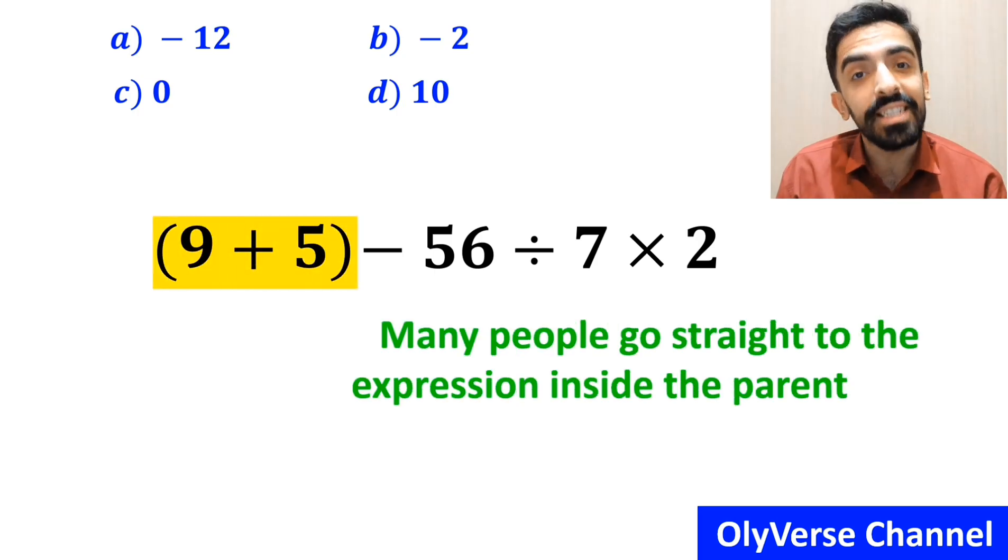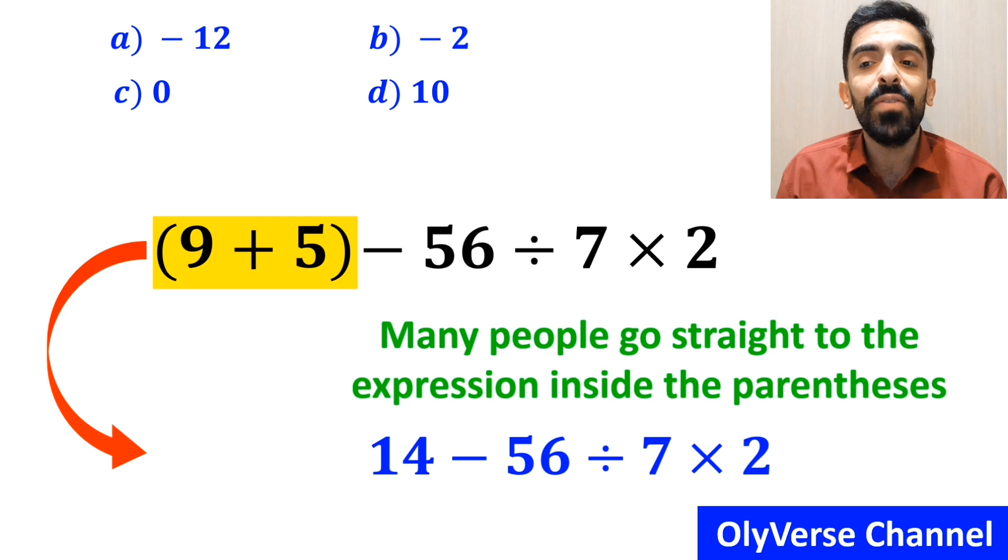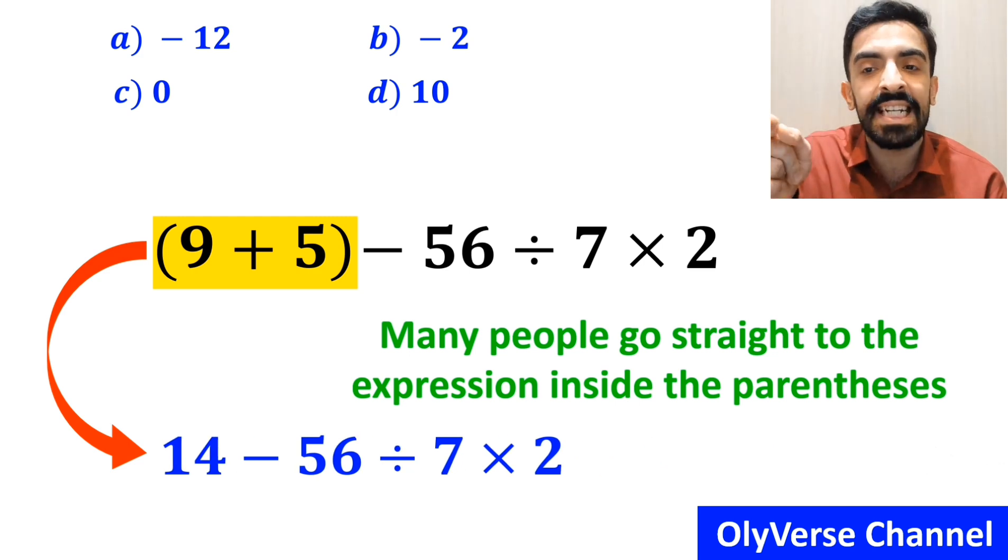In the first step to solve this question, many people go straight to the expression inside parentheses, and simplify the whole expression to 14 minus 56, divided by 7 times 2.